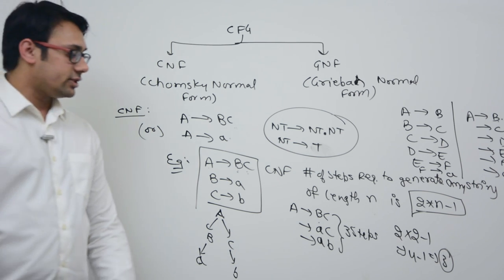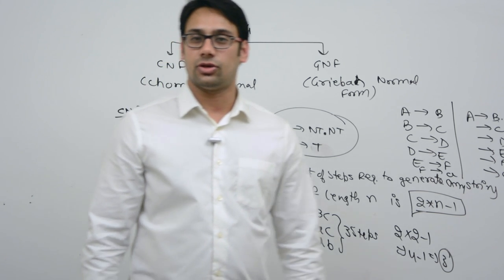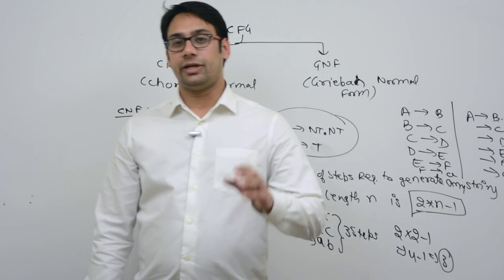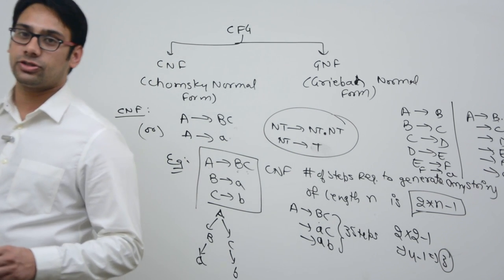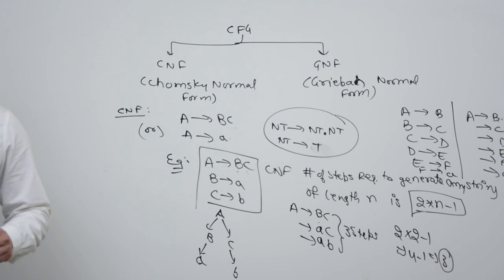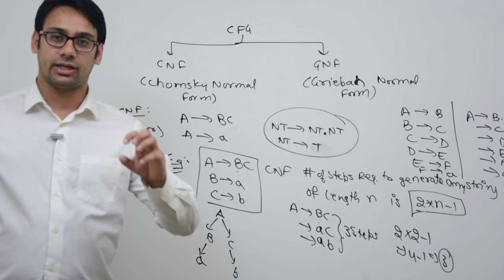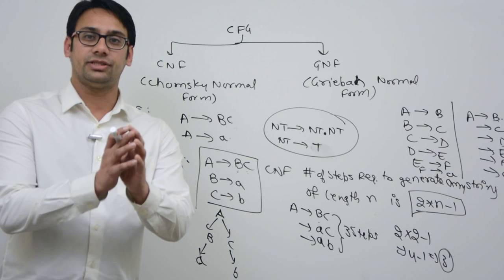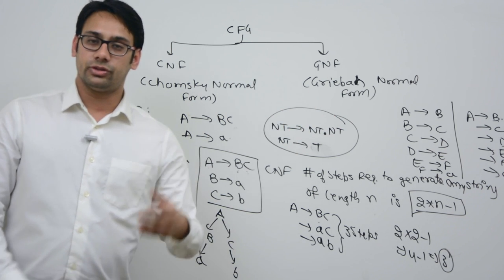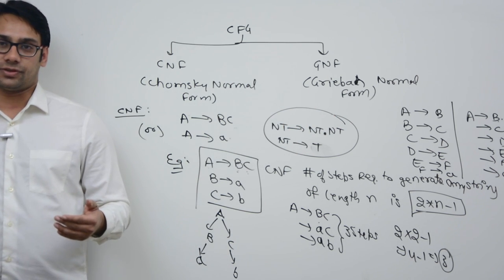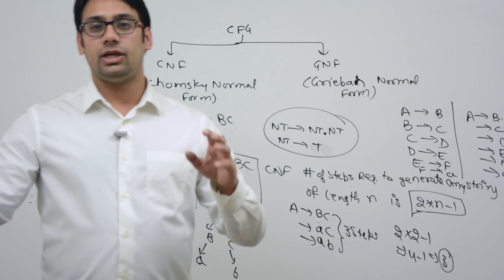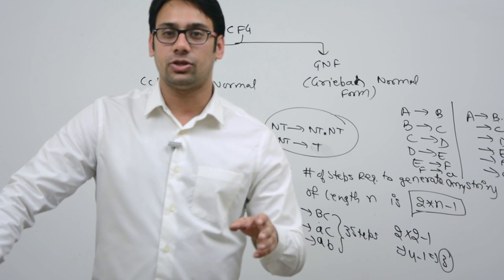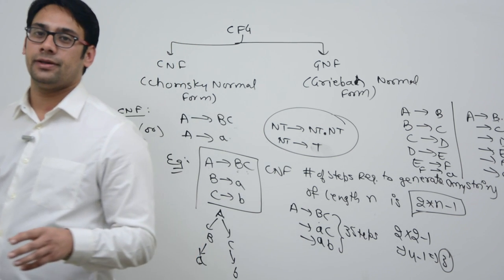Another advantage is that it is very easy to apply the CYK algorithm on CNF. The CYK algorithm is used to find the membership problem — that is, can a given string be generated from a given grammar or not? Now, if you are given any random grammar, will you be able to convert that grammar into Chomsky normal form or CNF?